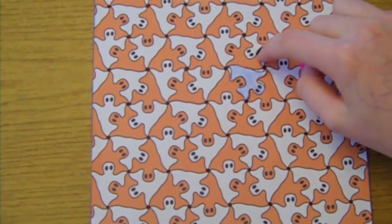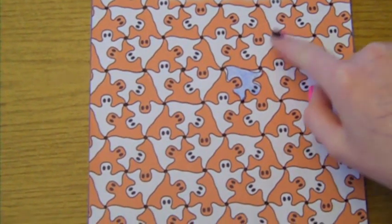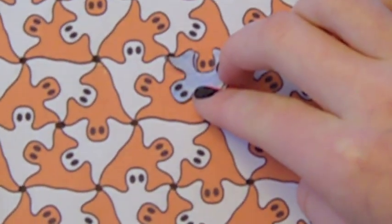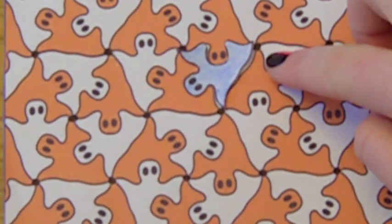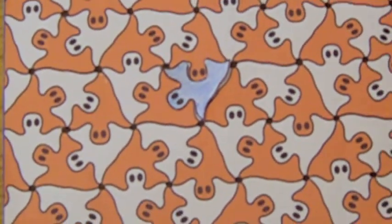Each set of three colored ghosts has one point of rotation. Each ghost rotates 120 degrees around its point of rotation to form this tessellation without overlaps or gaps. Thank you.